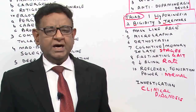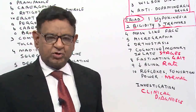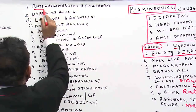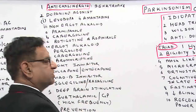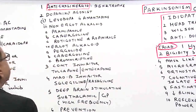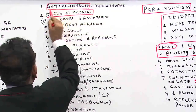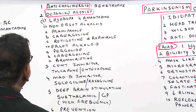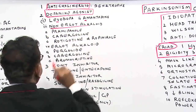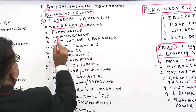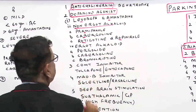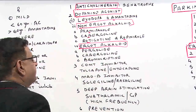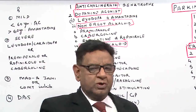Now, let us learn the pharmacology — what drugs are available. First is anticholinergic drugs; benztropine is one example. Second is dopamine agonists, which include levodopa, amantadine, and non-ergot alkaloids. Examples of non-ergot alkaloids are pramipexole, cabergoline, rotigotine, or ropinirole. Ergot alkaloids include pergolide, cabergoline, or bromocriptine — bromocriptine is an older drug while the other two are newer.